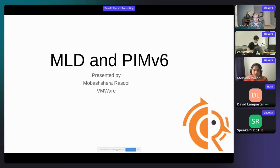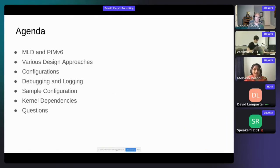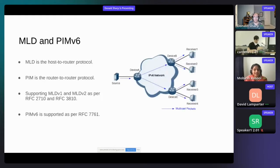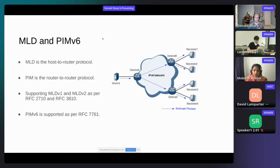The agenda for today is as follows. We will be discussing about MLD and PIM V6 RFC. We will look into various design approaches. We will look into some of the configurations and how we can do debugging and logging. We will also go through one of the sample configurations and then check out the kernel dependencies. As we all know, MLD is the protocol which runs between host to router, whereas PIM V6 is the protocol which runs between routers. In the community, we are supporting MLD V1 and MLD V2 as per RFC 2710 and 3810, whereas PIM V6 is supported as per RFC 7761.